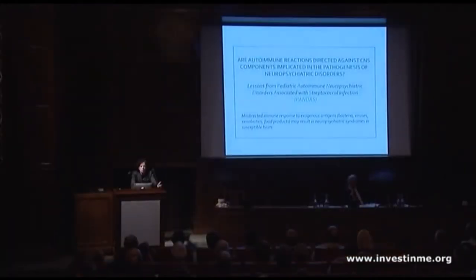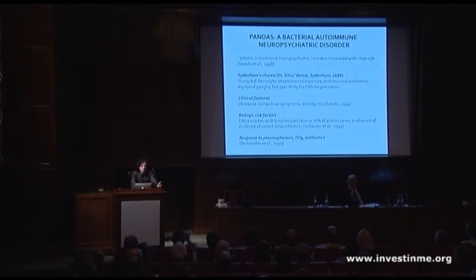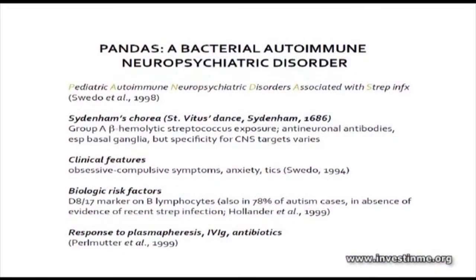We have an animal model as an example of how one can go from the idea that an infection can lead to an autoimmune response, and how the autoimmune response can mimic certain aspects of behavior and neurological abnormalities. This is based on the group A beta-hemolytic strep story, which was associated with Sydenham's chorea, and is associated with the acute onset of obsessive-compulsive symptoms, anxiety, and tics.